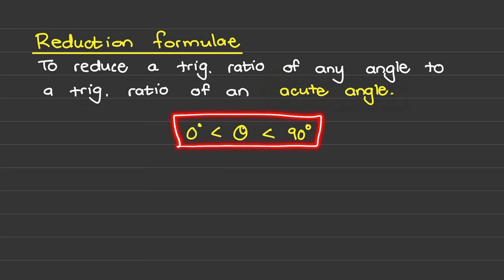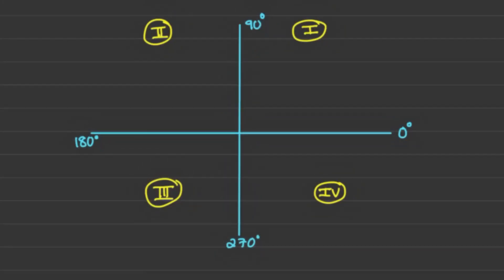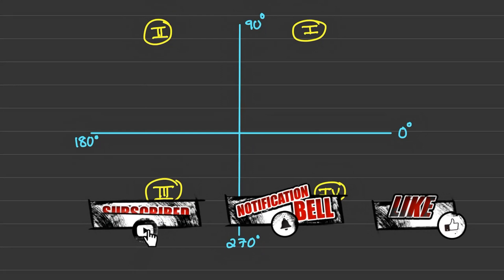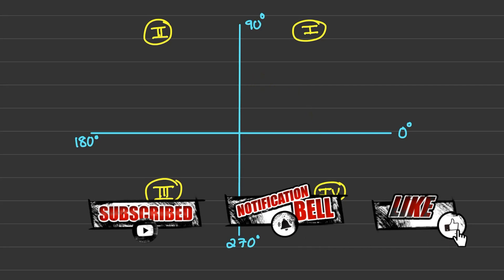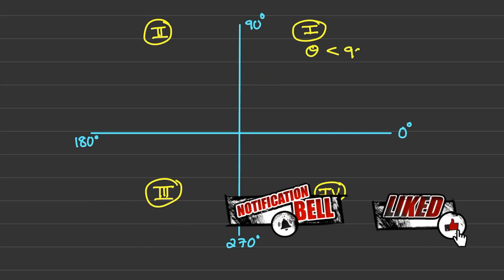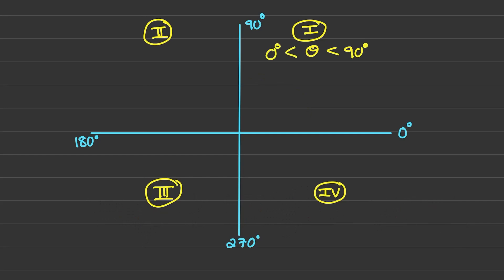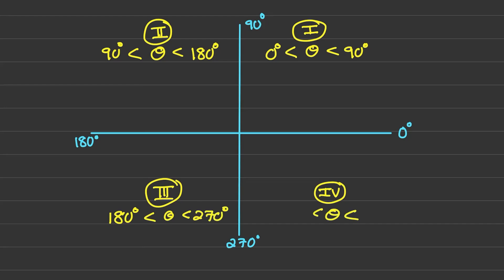Let's quickly refresh your memory on quadrants. Quadrant one is the area between 0 and 90 degrees, so theta is smaller than 90 degrees and bigger than zero. Quadrant two is where the angle is smaller than 180 degrees but bigger than 90 degrees. Quadrant three is between 180 and 270 degrees, and quadrant four is from 270 up until 360 degrees.